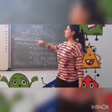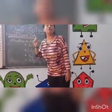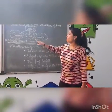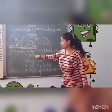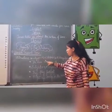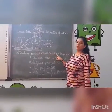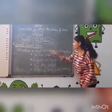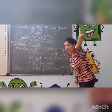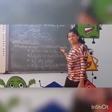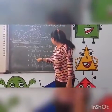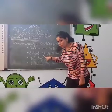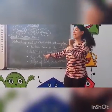So this is the structure of simple present tense which we have to keep in mind while framing sentences. Subject plus verb first form plus 's' or 'es' plus object — when the subject is singular. Singular means one. When the subject is plural, we use verb first form only. We don't use 's' and 'es'.